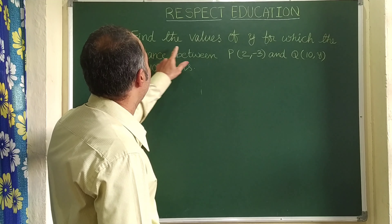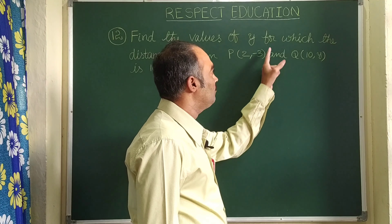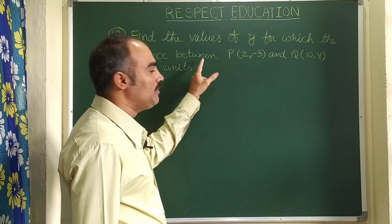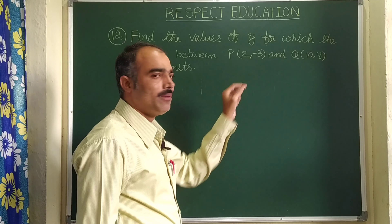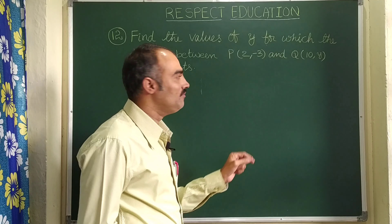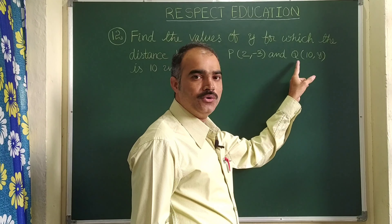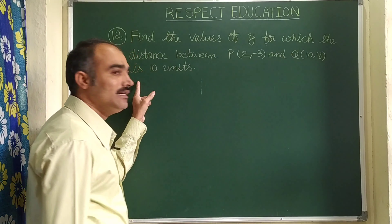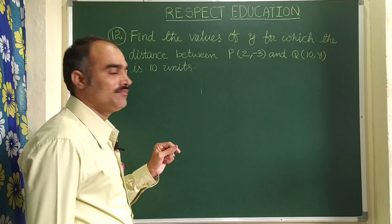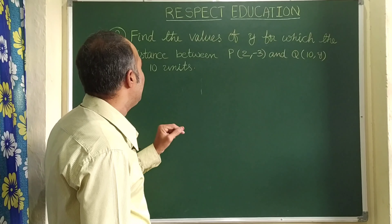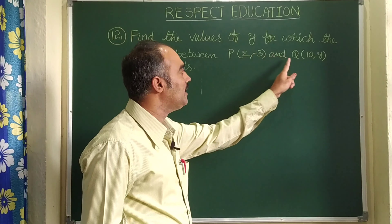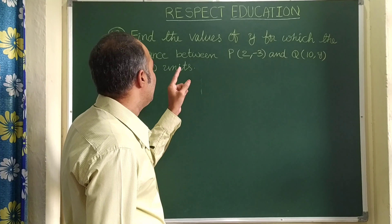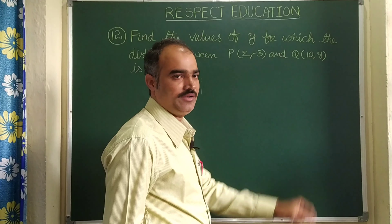Find the values of y for which the distance between P(2, -3) and Q(10, y) is 10 units. The meaning is that the distance between P and Q is 10 units, so we need to find the value of y.